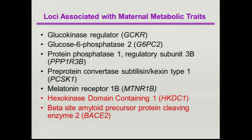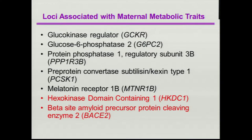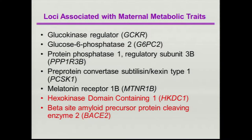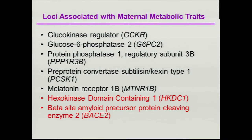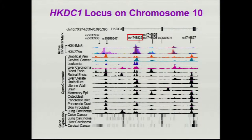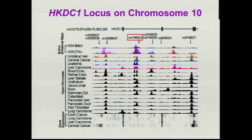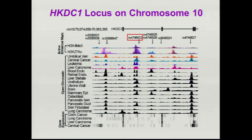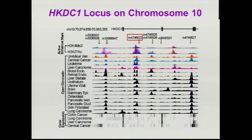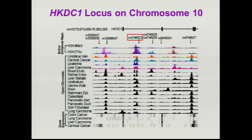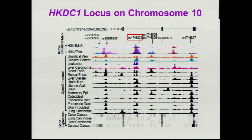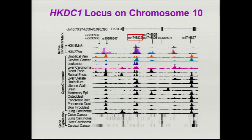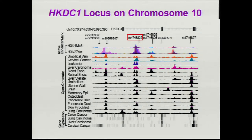Several of these genes were known to be associated with glucose-related traits in non-gravid populations, but two of them had not previously been shown in non-gravid populations. I'm going to talk about our studies with HKDC1 — hexokinase domain-containing-1 — which is located on chromosome 10, right next to hexokinase-1. If you overlay it over the ENCODE data, it looks like an area that's relatively transcriptionally active, with a lot of open chromatin in this region as well as some enhancer marks.